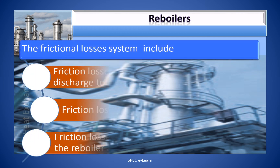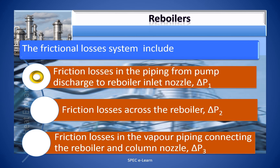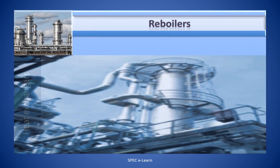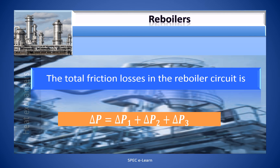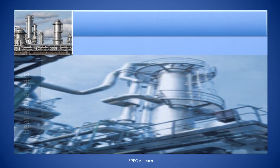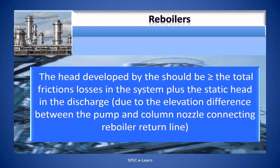The friction losses in the system include: friction losses in the piping from the pump discharge to the reboiler inlet nozzle (ΔP1), friction losses across the reboiler (ΔP2), and friction losses in the vapor piping connecting the reboiler and the column nozzle (ΔP3). The total friction losses in the reboiler circuit is ΔP = ΔP1 + ΔP2 + ΔP3. The head developed by the pump should be greater than or equal to the total friction losses plus the static head due to the elevation difference between the pump and the column nozzle connecting the reboiler return line.